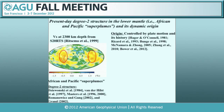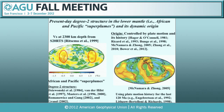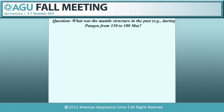In the geodynamic community, the consensus view is that such a degree-2 structure is really a result of plate motion history. The subduction history controls the location of downwellings and organizes the flow field. A calculation by Alan McNamara and myself using plate motion history for the last 120 million years reproduced such a structure fairly nicely. One question we can ask is: what was the mantle structure in the past, for example since the Paleozoic? This is important because mantle structure has implications for the Earth's gravity field, volcanism, seismicity, and more.